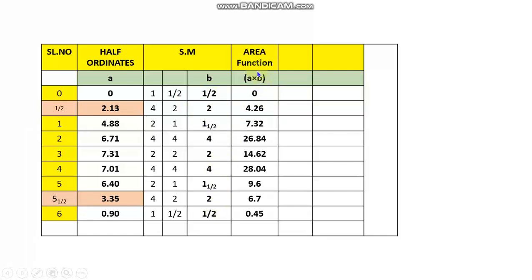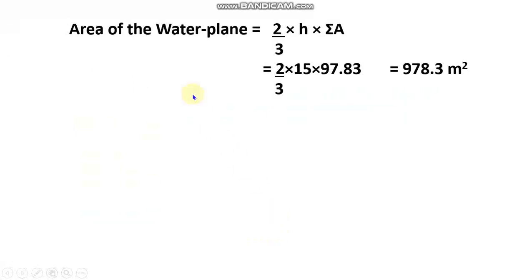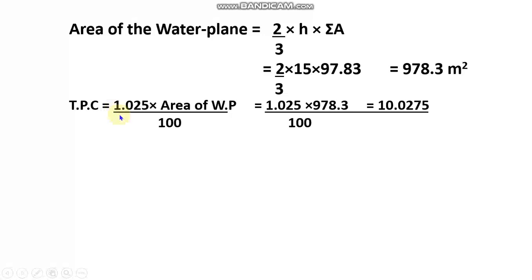In the next column we find the area function — that is A multiplied by B — where A is the half ordinates column and B is the final Simpson's multipliers column. Multiplying these at each station and summing gives sigma A = 97.83. The formula for the water plane area is (2/3) × h × sigma A. Here h = 91/6 = 15, so the water plane area = (2/3) × 15 × 97.83, which gives us 978.3 square meters. The first part of the answer is done.